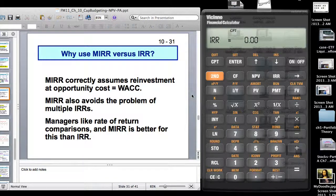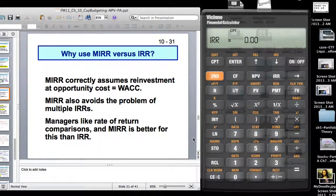Why use MIRR versus IRR? Like Mike Kuhn actually already preempted that slide there. It correctly assumes reinvestment at the opportunity cost. It also avoids the problem of multiple internal rate of returns and managers they like rate of return comparisons and so MIRR is better for this. So three reasons. It avoids the problem of multiple IRRs, assumes reinvestment at the opportunity cost and managers like the rate of return comparisons as opposed to dollar numbers. Because then they are scale invariant.